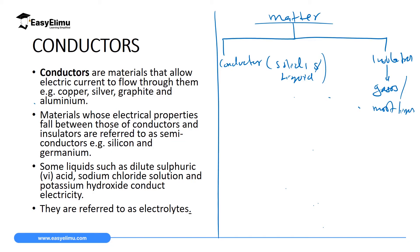Under conductors, all metals are good conductors. Examples of metals in this case include copper, silver, aluminium, magnesium, and all other metals.